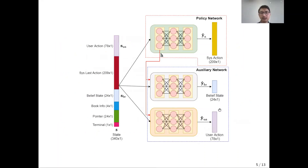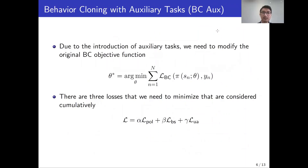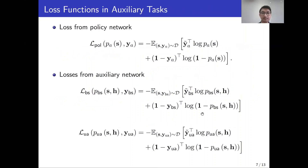This is the overall structure, where the auxiliary network takes input from the state and the output of the first hidden layer of the policy network. Since we introduced auxiliary tasks, the objective function of the original BC is modified by a weighted sum of three losses: loss of the policy network, loss of belief state, and loss of user action. All of them are cross-entropy losses.